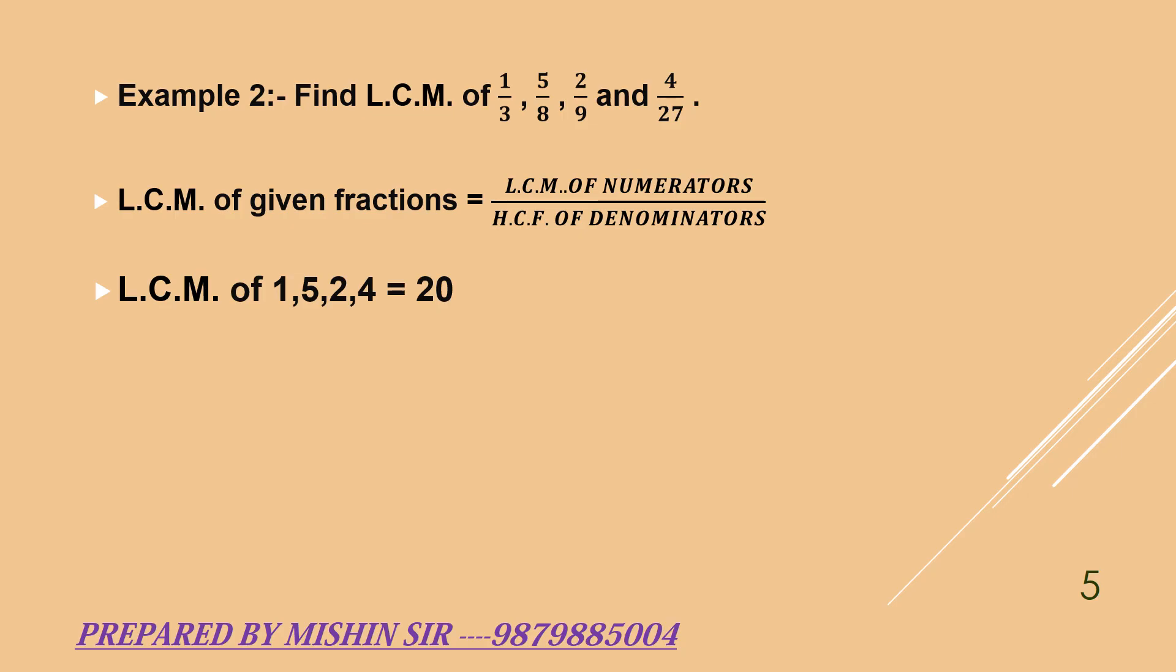So, LCM of numerator that is 1, 5, 2, 4 is 20 and HCF of denominator 3, 8, 9, 27 is 1.